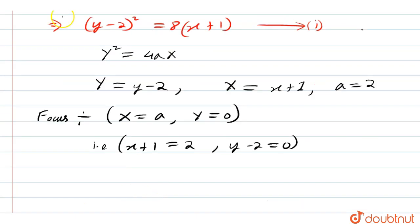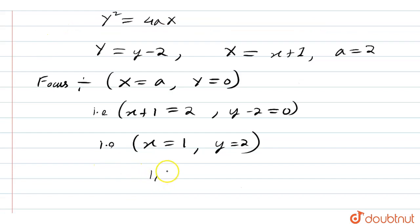Okay, that means from here we will get value of x equal to 2 minus 1 that is 1 and value of y equal to 2. So our focus is 1 comma 2. So this is our answer. Thank you.